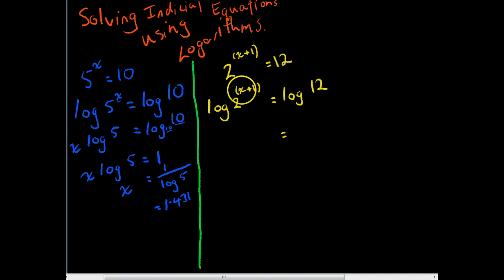Now third log law, this x plus 1 can go from here to the front. So we end up with x plus 1 times log base 10, 2. We'll keep this here, log 12.